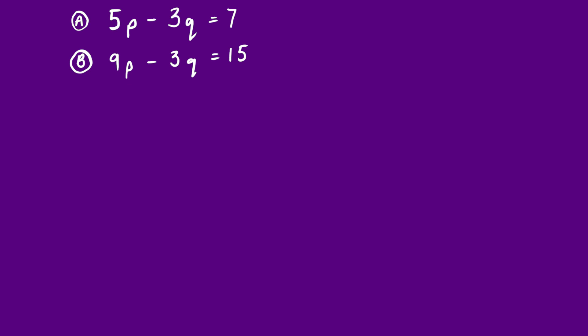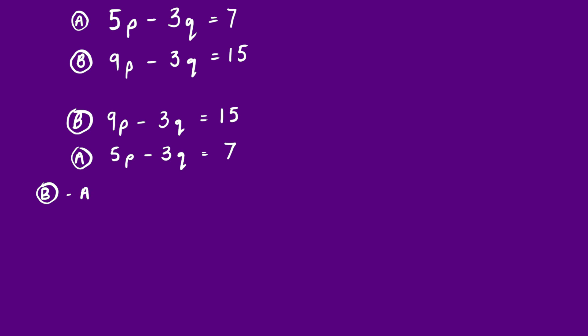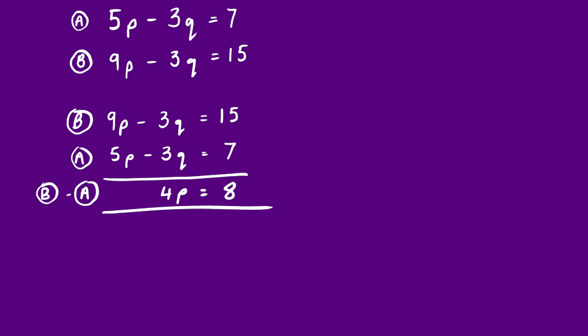You could subtract B from A, doing 7 − 15 and 5p − 9p — that works fine. But to make life easier, let's do B take away A: 15 − 7 = 8; negative 3q take away negative 3q gives 0q — they've gone; and 9p − 5p is 4p. So we get 4p = 8, therefore p = 2. Stage one complete.